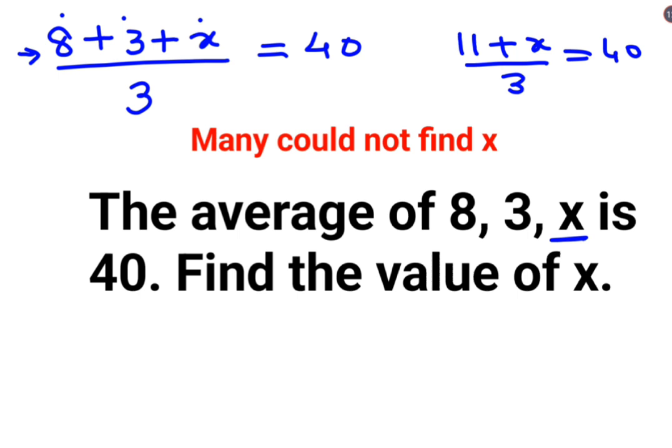Now you will multiply both sides by 3 to get rid of this denominator. So now you have 11 plus x equals 40 into 3, which gets you 120.